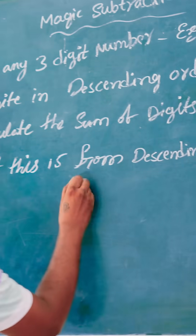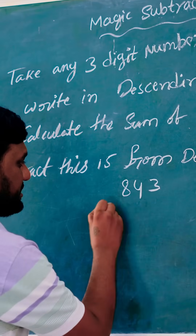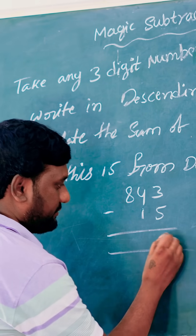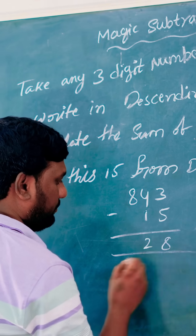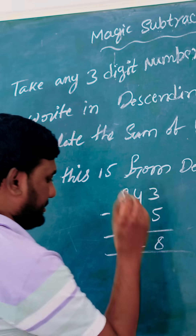That means 843 minus 15. Working it out: 3 minus 4 — borrow to get 8, then 3 minus 1 is 2, and 8 stays. The answer is 828.